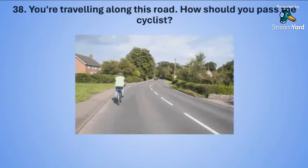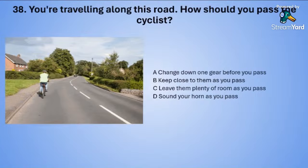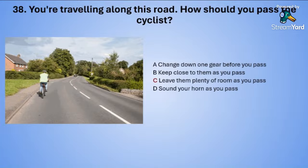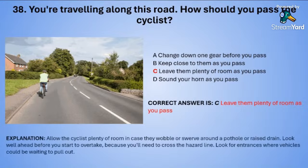Question thirty-eight: You are travelling along a road. How should you pass the cyclist? A: change down one gear before you pass. B: keep close to them as you pass. C: leave them plenty of room as you pass. Or D: sound your horn as you pass. The correct answer is C — leave them plenty of room as you pass.